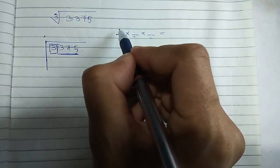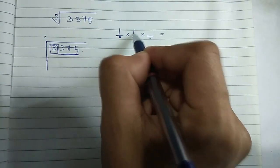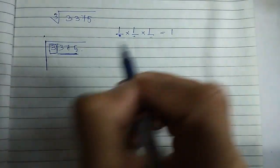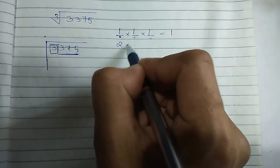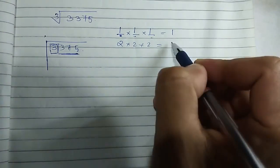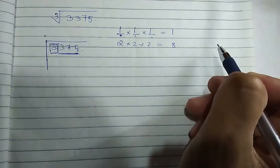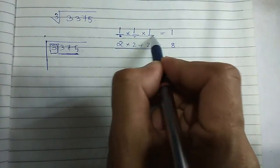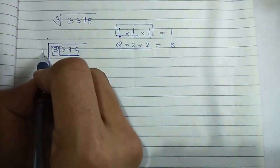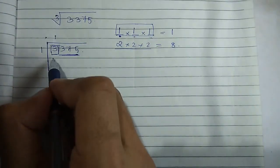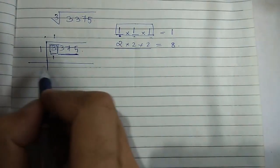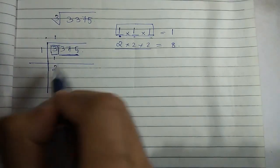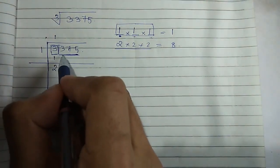Let us try with 1: 1×1×1 equals 1, which is less than 3, so that works. Let us also try 2: 2×2×2 equals 8, which is more than 3, so we cannot use 2. Therefore we use 1.